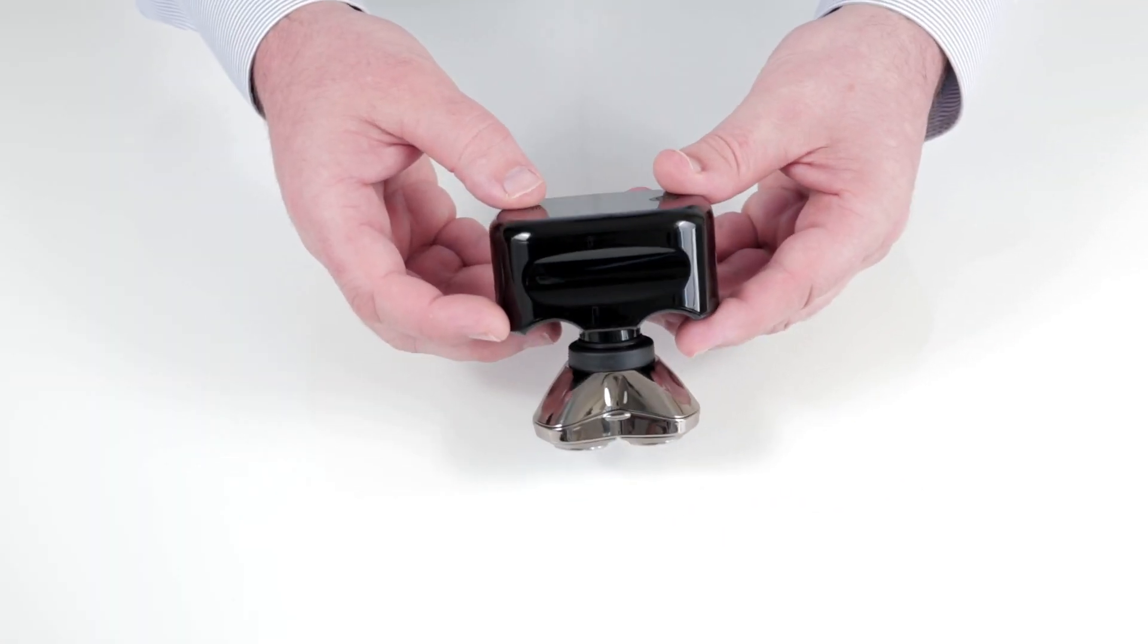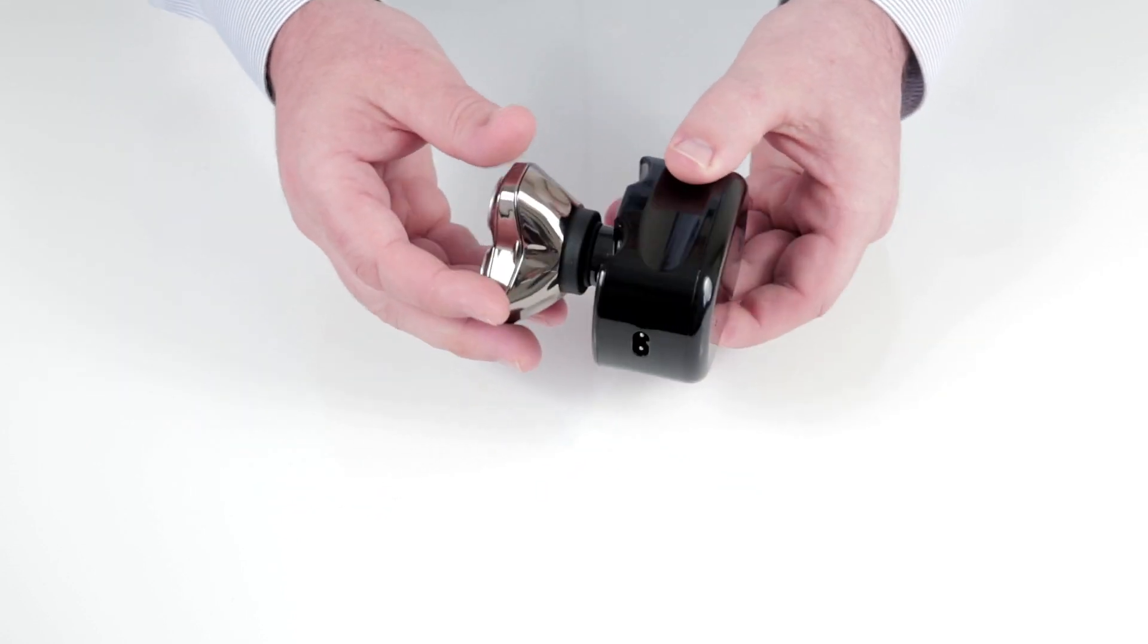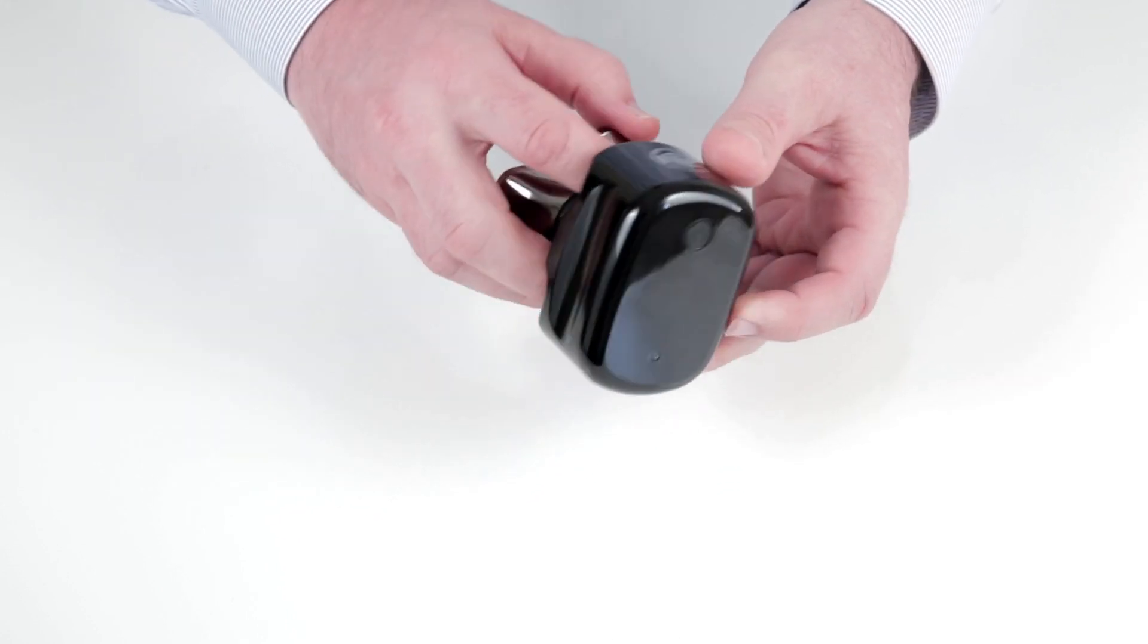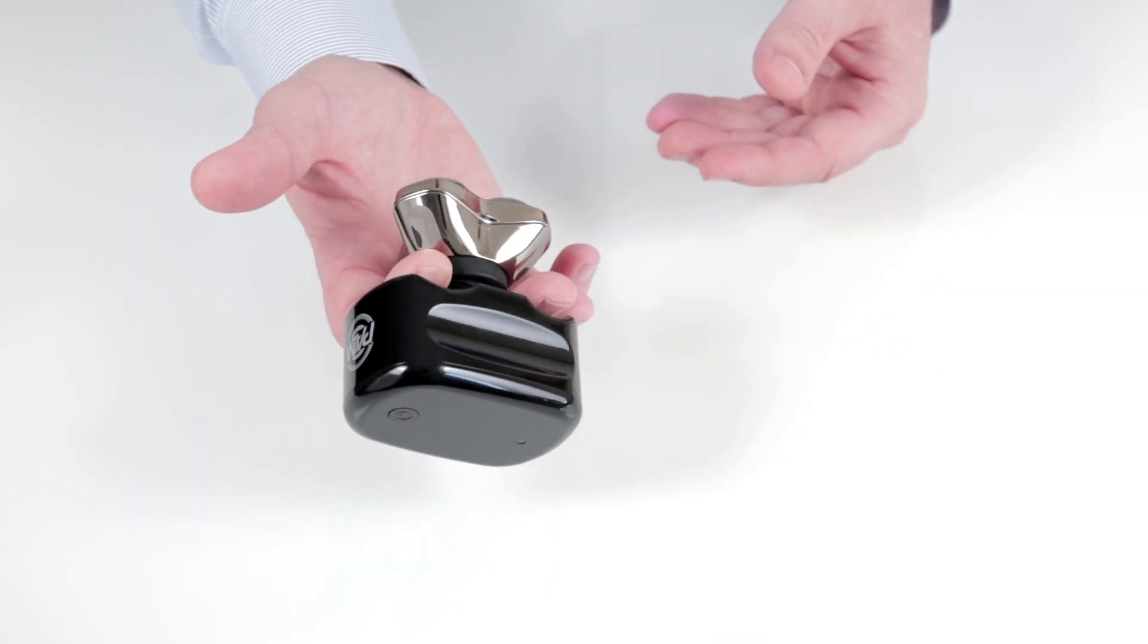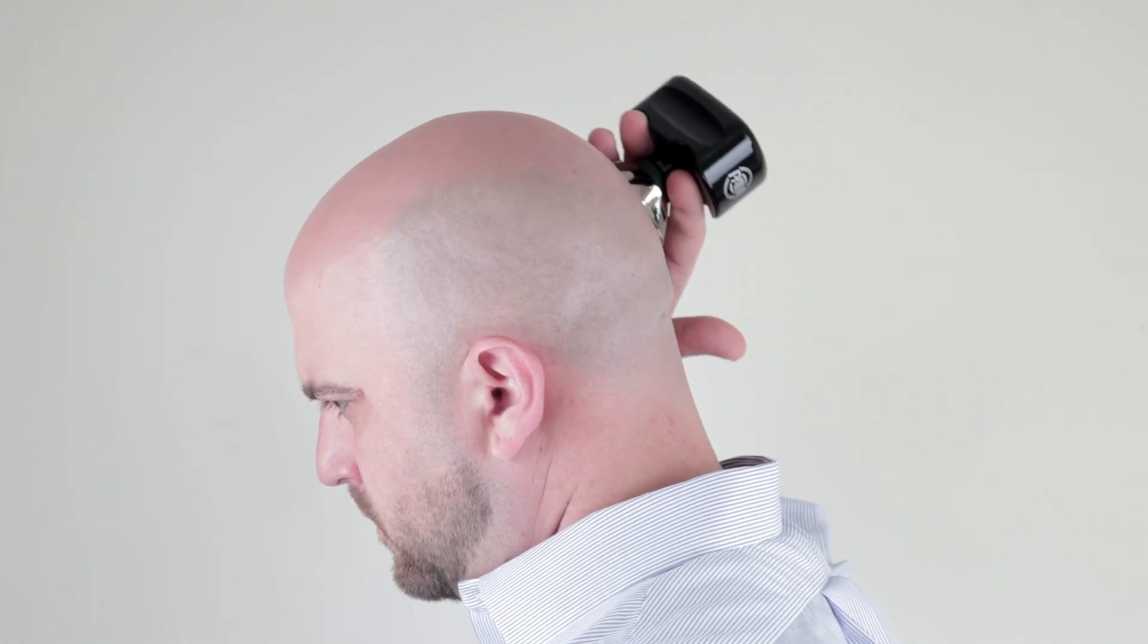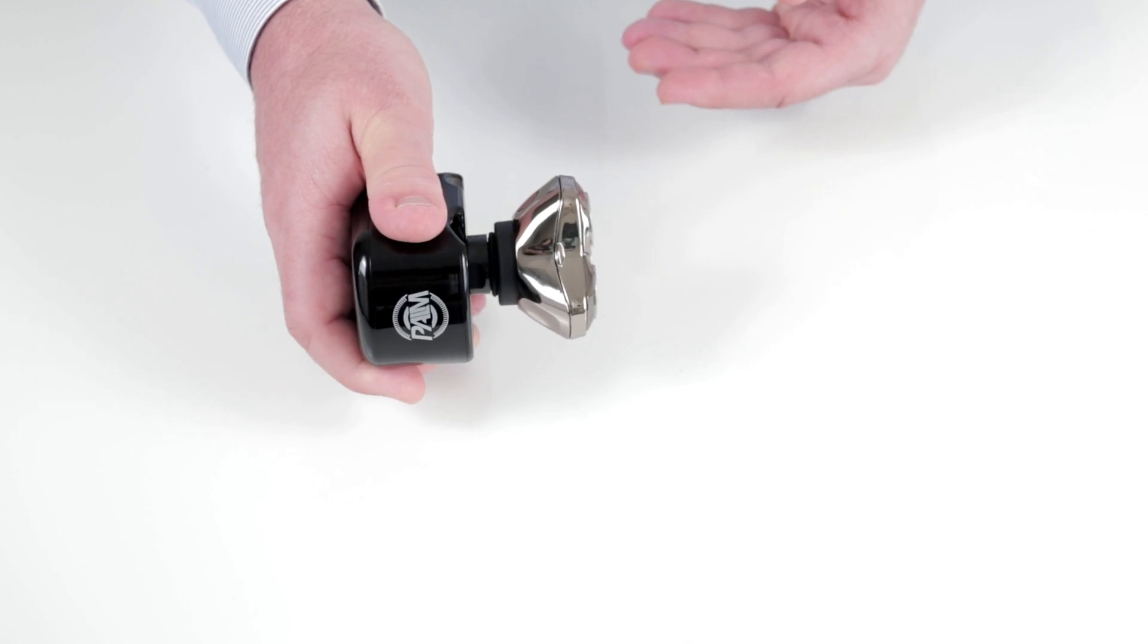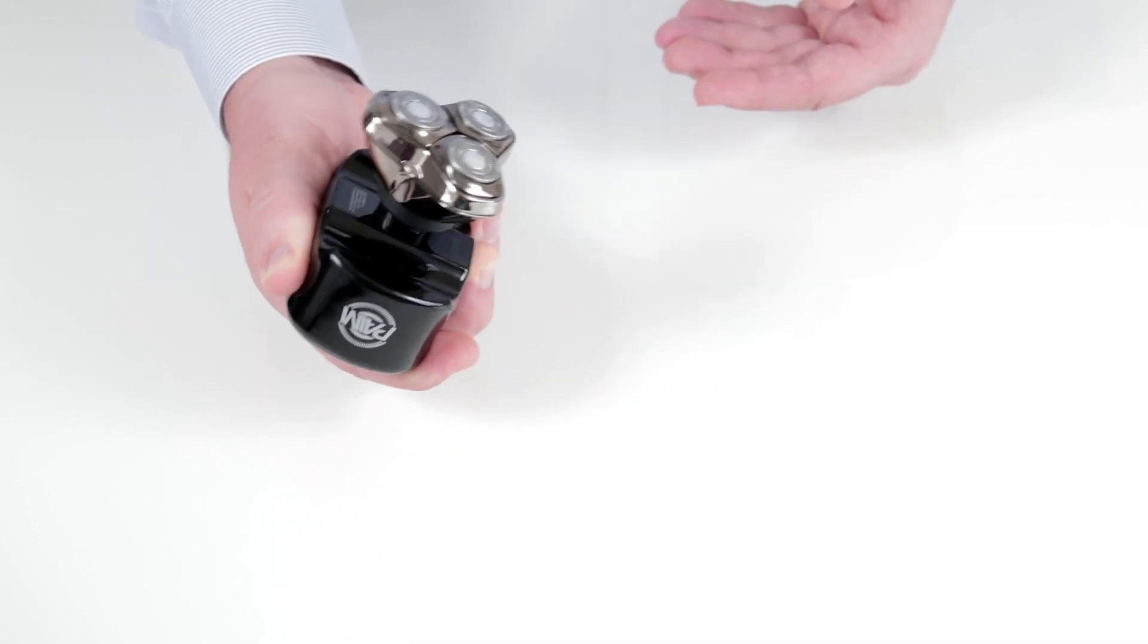The shaver's design gives you a couple of options for grips. You can hold it between your fingers like this, making it convenient to shave the back of your head, or you can hold the top of the handle like this, which is convenient for shaving the top of your head, the sides of your head, or your face.